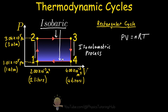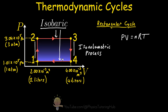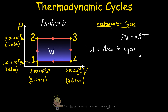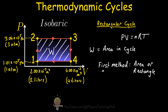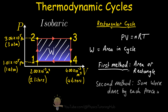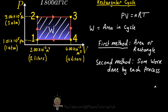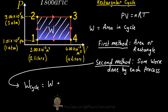Knowing what type of thermodynamic process we're dealing with in a cycle is important if we want to calculate the work done by the cycle, because work done is simply equal to the area within the cycle. There are two ways we can calculate the work done for this type of cycle. The easy way is to multiply the difference in pressure by the difference in volume — finding the area of the rectangle. But we can also sum up the work done by each process individually.